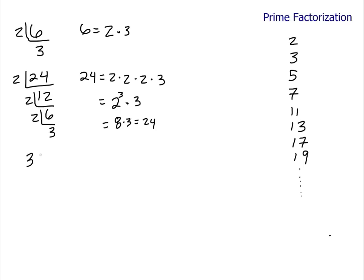35. Let's break down 35. If you know your multiplication tables, you know 2 and 3 won't go into 35. But you do know that 5 will go into 35 seven times. And 7 is a prime number. So 35 is equal to 5 times 7.